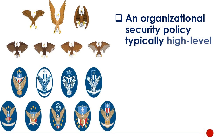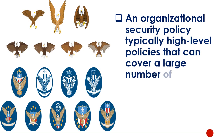An organizational security policy consists of typically high-level policies that can cover a large number of security controls. The primary information security policy is issued by the company to ensure that all employees who use information technology assets within the breadth of the organization or its networks comply with its stated rules and guidelines.